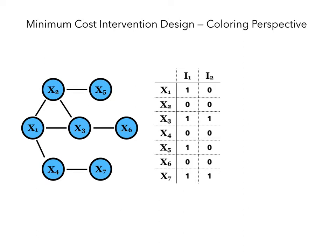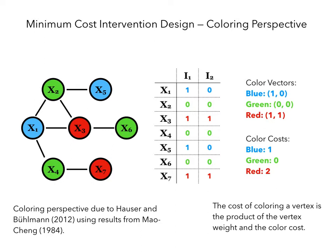We thus consider approximations for the problem. We first go over the coloring perspective on intervention design. Given a graph and some intervention design, we represent the intervention design with a table, where the rows correspond to variables and the columns correspond to interventions. We use a binary value to denote whether variables are involved in some intervention. For an intervention design to be valid, it must be that for every pair of variables connected by an edge, there is some intervention where one is involved and the other is not. Otherwise, this edge would never be cut.